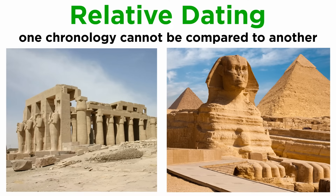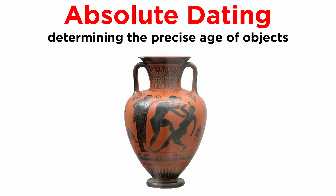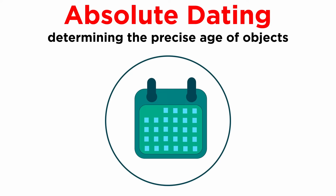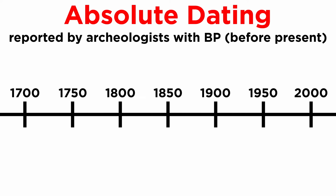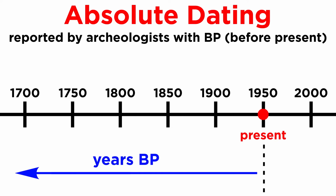However, a site's chronology can't be compared to another site without actual dates. Dating methods utilized to find actual dates are called absolute dating. Different calendar systems are used throughout the world, so scientists need to agree on a reference date to set absolute dates. Therefore, archaeologists often use BP to discuss absolute dates. This means years before present. Specifically, present is set to 1950, as that is when radiocarbon dating was first utilized.